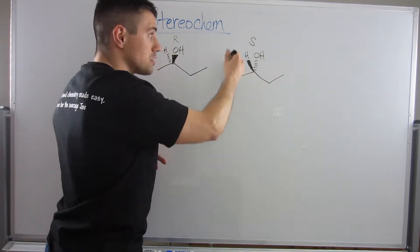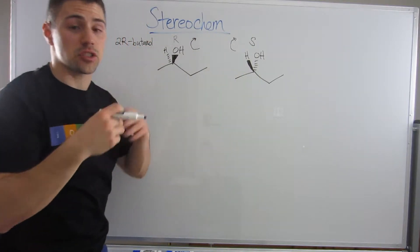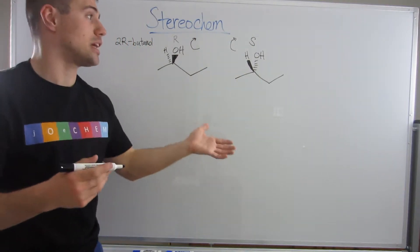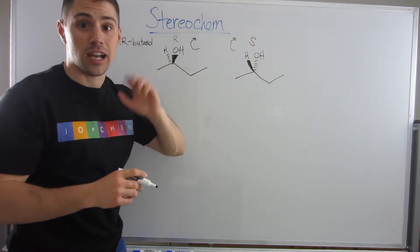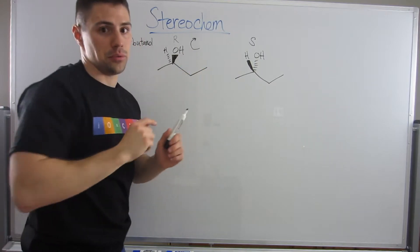1, 2, 3, it looks like R, but lowest priority group is facing us so we have to flip our configuration, so we have to assign S. So this 2R butanol, this would be 2S butanol.